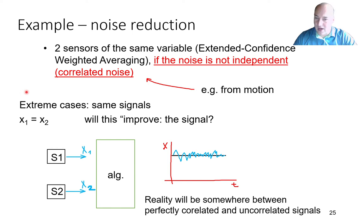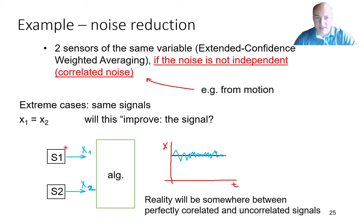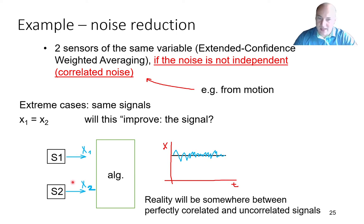Last week I was talking about how to reduce noise if you have two signals from two sensors measuring the same variable. At the very end I was showing an example of how to use this when the noise is not correlated. The question now is what will happen if we have correlated noise — where the noise on those two signals is the same, not independent — and I will show you an extreme case.